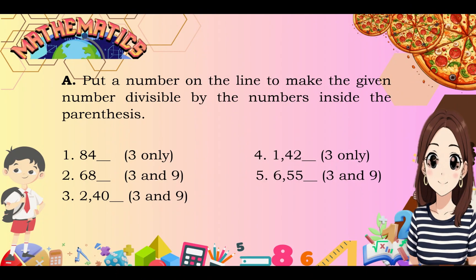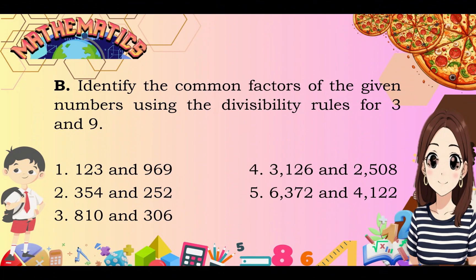Now it's your turn. Put a number in the blank to make the given number divisible by the numbers in parenthesis. Number 1: complete 84_ to make it divisible by 3 only. Number 2: write a number to make the given number divisible by both 3 and 9. Number 3: also divisible by 3 and 9. Number 4: make the number divisible by 3 only. Number 5: add a number to make it divisible by 3 and 9. Next activity: identify the common factors of the given numbers using the divisibility rules for 3 and 9. Good luck!